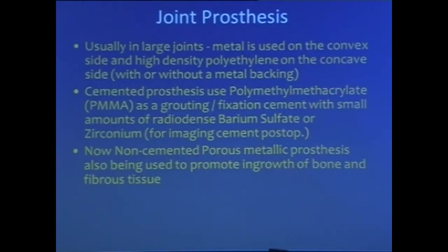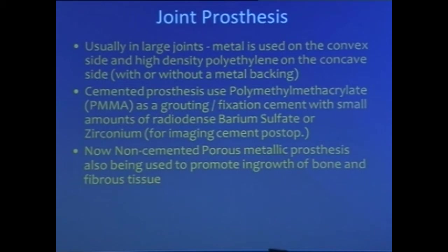The joint prosthesis usually has metal on the convex side and high-density polyethylene on the concave side, using polymethyl methacrylate as a fixator. Instead of barium sulfate, a lot of it has been replaced by zirconium. And now, as all of you here also must know, non-cemented porous metallic prosthesis is used to promote in-growth of bone and fibrous tissue.